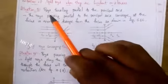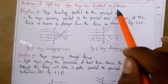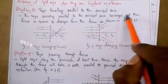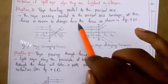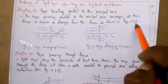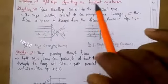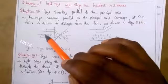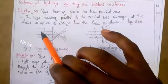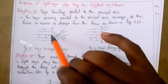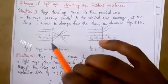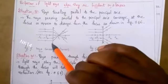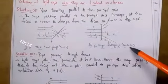Situation 3: rays traveling parallel to the principal axis. Rays passing parallel to the principal axis converge at the focus or appear to diverge from the focus, as shown in figures 5 and 6. In the convex lens diagram, the parallel rays converge toward the focal point after refraction.